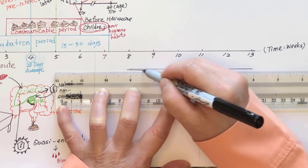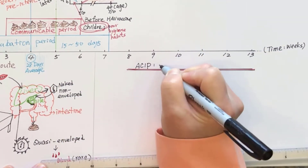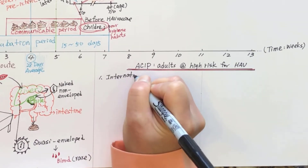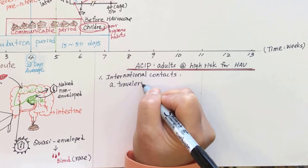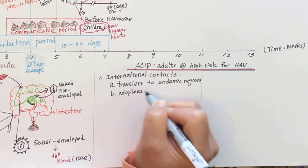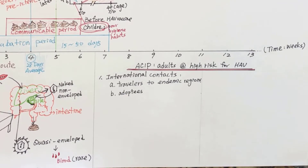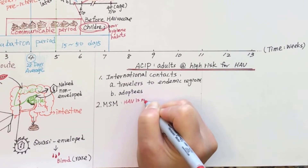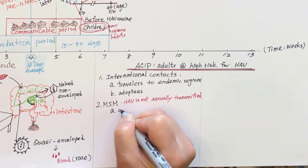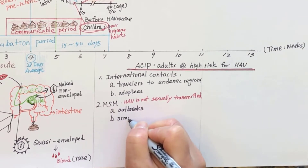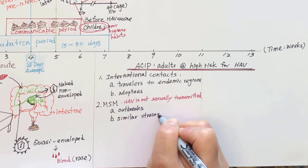The Advisory Committee on Immunization Practices (ACIP) has identified the following groups of adults as at risk for hepatitis A infection. International travelers to endemic regions of the world are at increased potential for exposure. People having close contact with international adoptees are also at increased risk, as most international adoptees for U.S. families come from endemic regions. Men who have sex with men are also at risk; although hepatitis A is not transmitted via sexual contact, outbreaks have been reported among this group and similar viral strains were found among infected individuals.